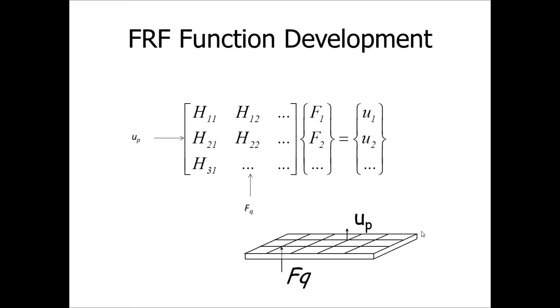to produce the displacement vector. And in this case, the frequency response function matrix is called a receptance matrix, or a dynamic flexibility matrix. And a row here defines a response degree of freedom, whereas a column in H represents a force degree of freedom.